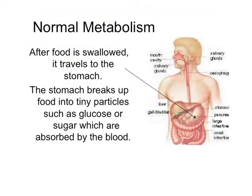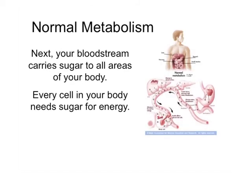The best way to understand diabetes is to first think about how somebody without diabetes converts food into energy. For example, when I eat food, there's always a certain amount of food that has a type of sugar or carbohydrate. When I absorb that food into my intestine, those carbohydrates are all converted into a form of sugar called glucose. That glucose is absorbed into the bloodstream, causing the blood glucose level to go up. Food is taken into the intestine, converted into glucose, absorbed into the bloodstream, and the blood glucose level rises.